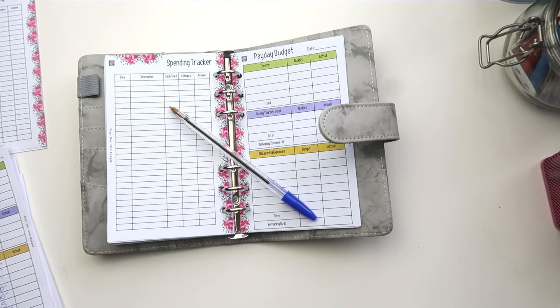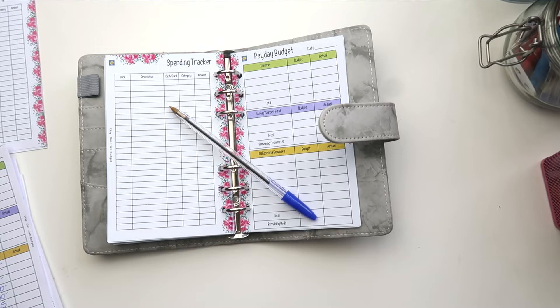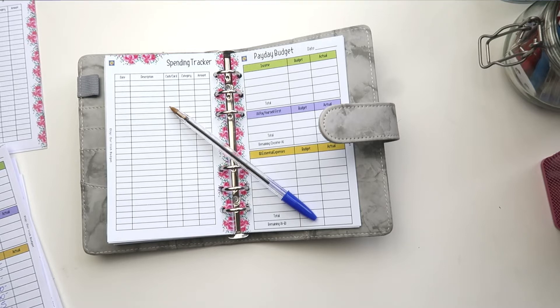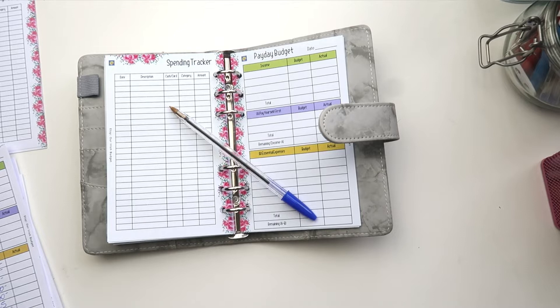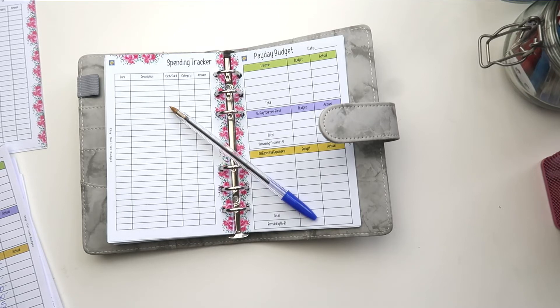Hey guys and welcome back to my channel. Today we are going to be doing the second payday budget of November. In the last video when I did my check-in you'll see that I have some overspends in three categories. So in this budget we're going to have to offset those overspends, but that means that we're going to have to reduce spending in other areas as well.